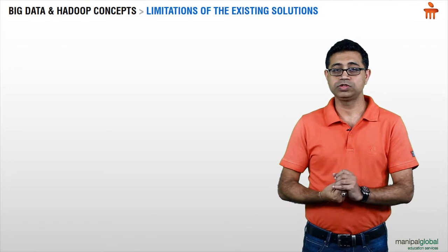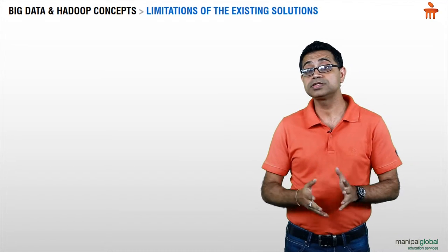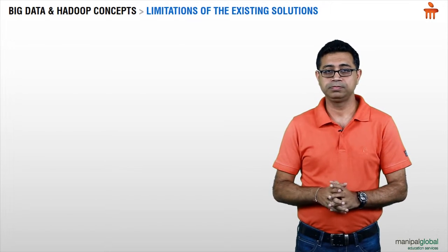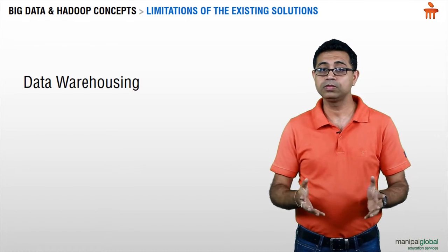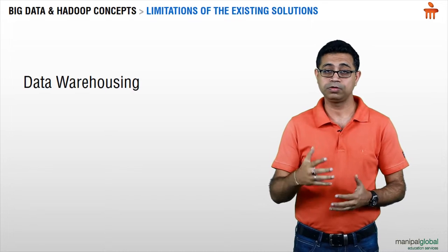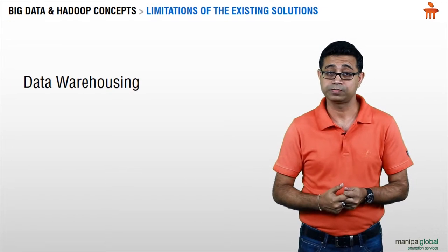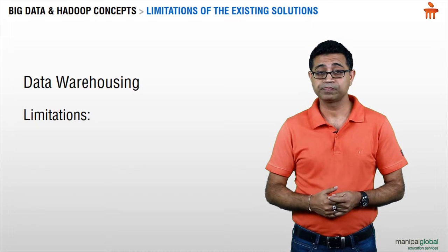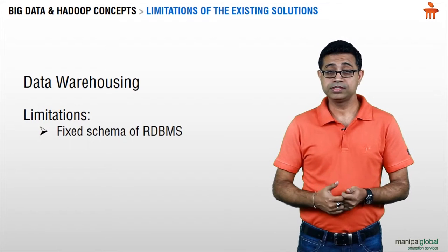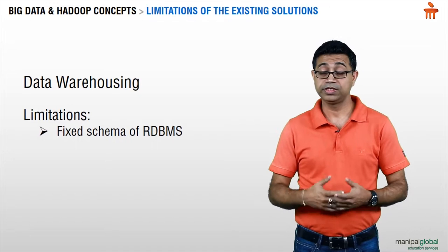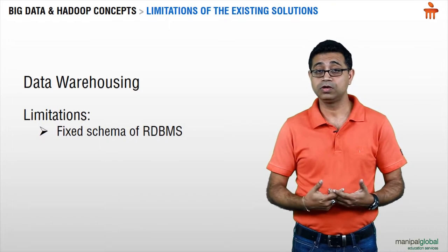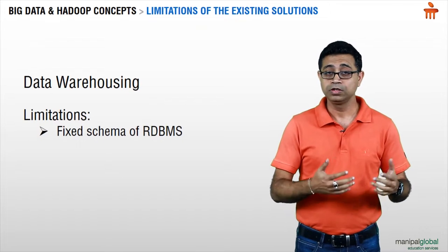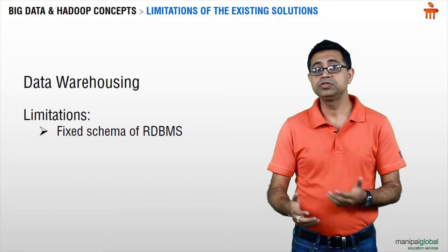Now let's look at the limitations of the existing solutions. What are these existing solutions? There is data warehousing, which builds on top of an RDBMS data store. The first limitation is that RDBMS has a fixed schema — the table, schema, rows, and columns are all described right up front before the database moves into production.